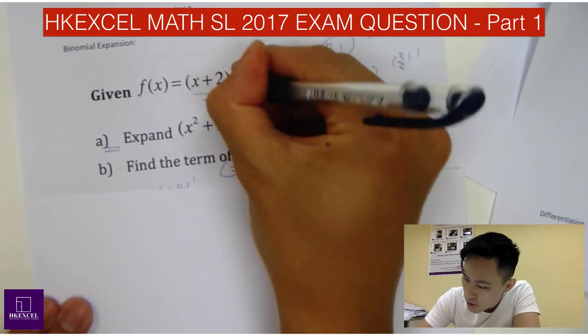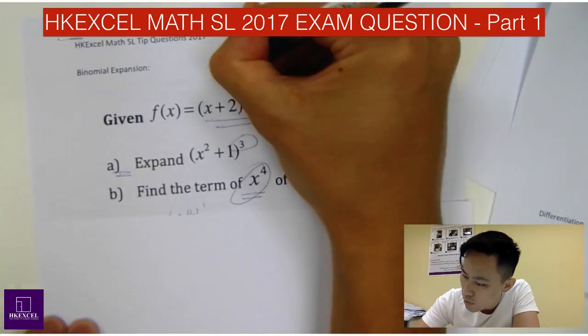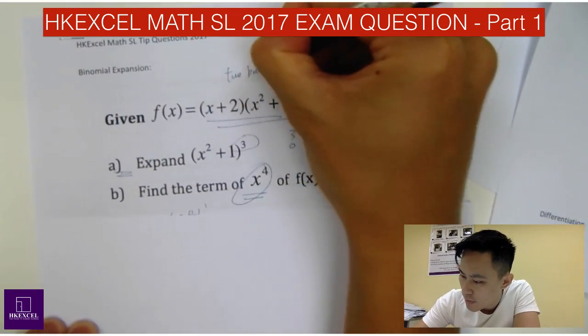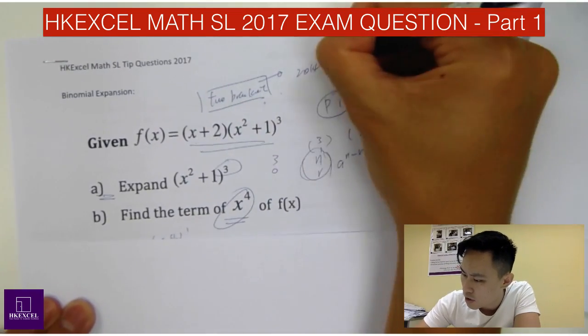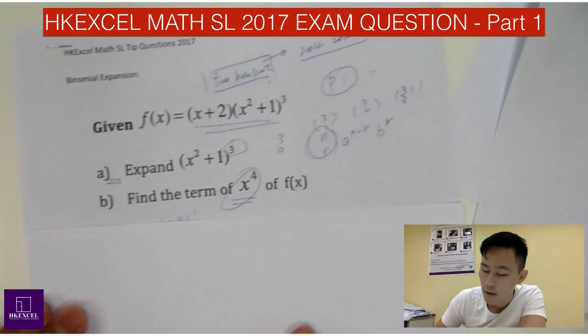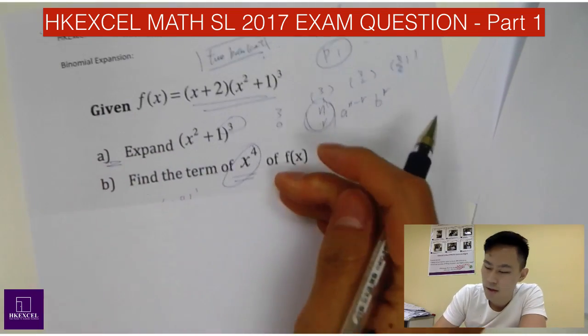So f(x) equals (x+2)(x²+1)³, two bracket binomial expansion question. So this one first appeared in 2014 and 2015 exam. So question is quite typical.